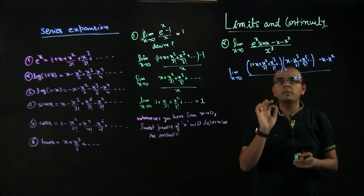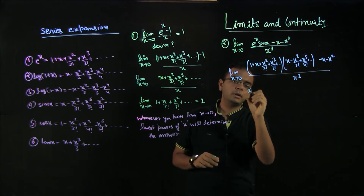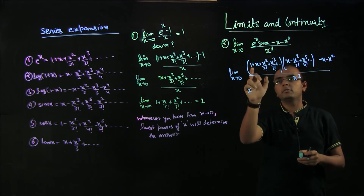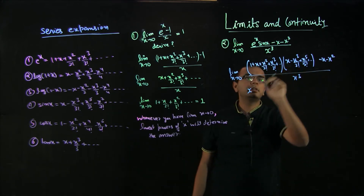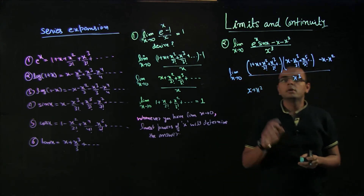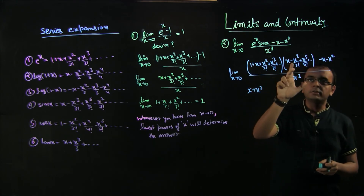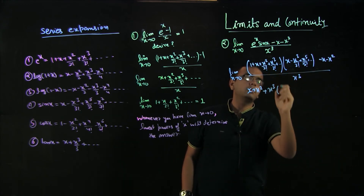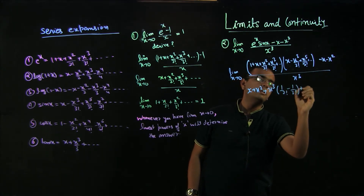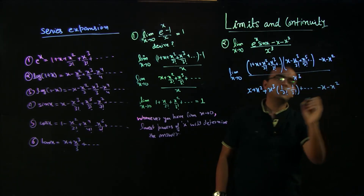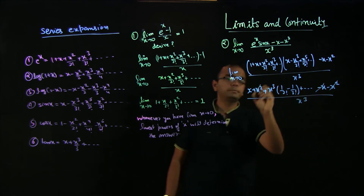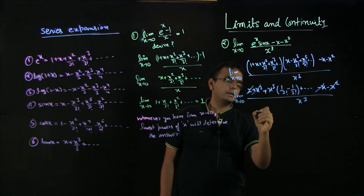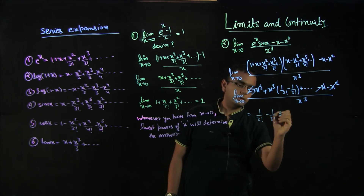Now we collect terms by power of x. The only way to get x is multiplication of 1 with x. For x², it is x multiplied by x. For x³, we get contributions from 1 times x³ by 3 factorial and x times x² by 2 factorial, giving a coefficient of 1 by 2 factorial minus 1 by 3 factorial for x³. The x and x² terms cancel out as expected, and the answer is 1 by 2 factorial minus 1 by 3 factorial, which equals 1 by 3.